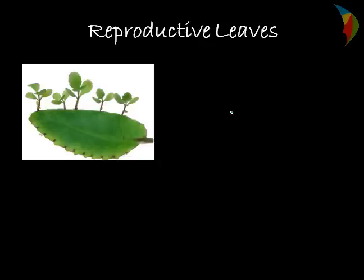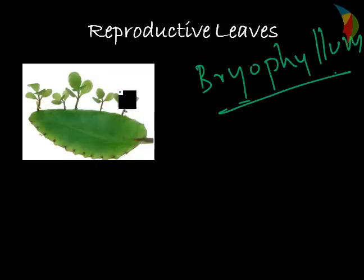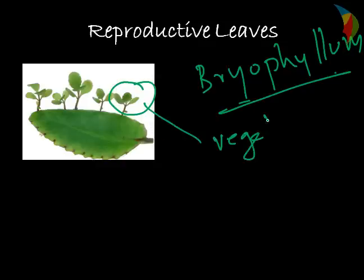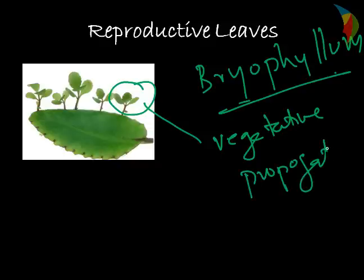The next type of modification is reproductive leaves. This is mostly found in Bryophyllum. Here the leaves at the nodal region help in producing small buds. The small buds arise from the leaves and this helps in vegetative propagation of the plant.